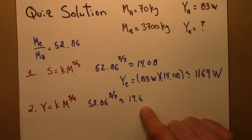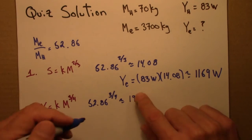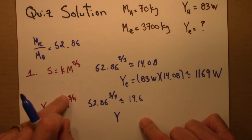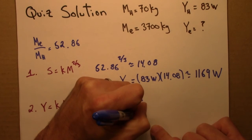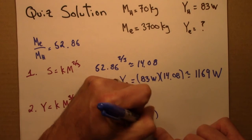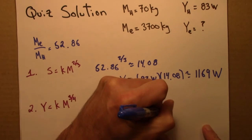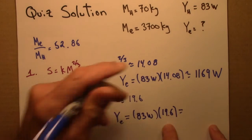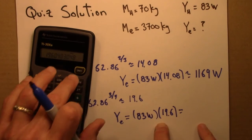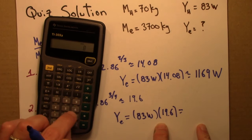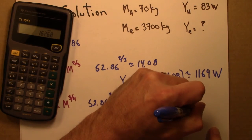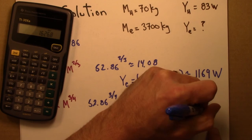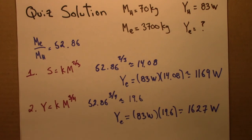So note that that's a larger number than before. And now, using this correct result, I would take the human metabolic rate, multiply it by 19.6, and that would give me the predicted metabolic rate of the elephant. Let's see what that is, 83 times 19.6, 1627. And that's in watts.